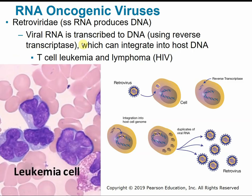RNA oncogenic viruses include the retroviridae family — single-stranded RNA that produces DNA. The viral RNA is transcribed to DNA using reverse transcriptase and can integrate itself into the host cell DNA. Retroviruses like HIV can cause T-cell leukemia or lymphoma. This is typically how people die from HIV and AIDS — the virus attacks T-cells that help activate and manage the overall immune system, crippling it so the person can't fight off basic infections. Most people who die of AIDS die from these secondary infections, not from the virus itself.